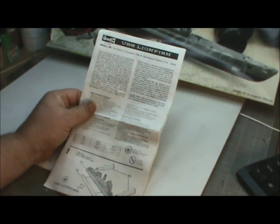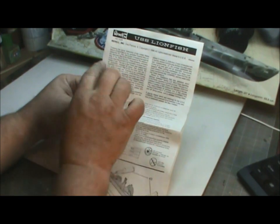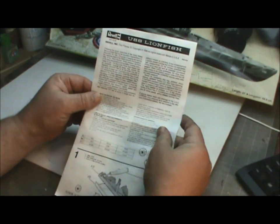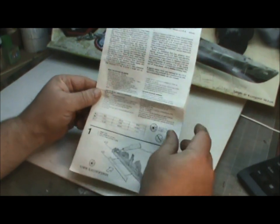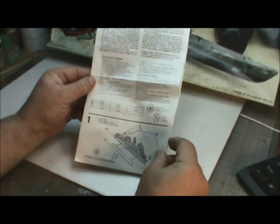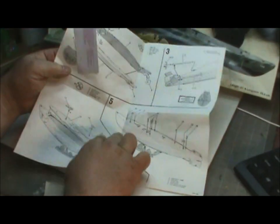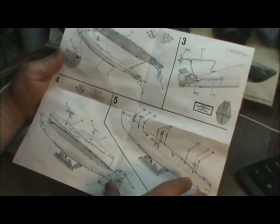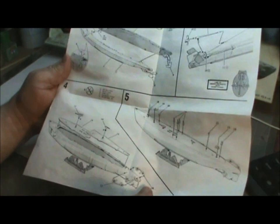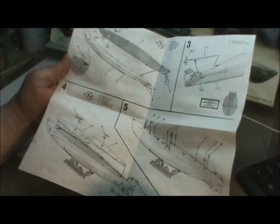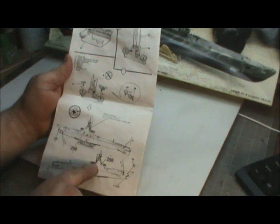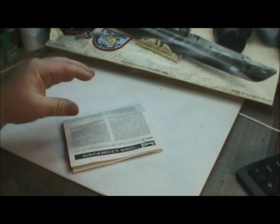And lastly, we have our instructions. Instructions are pretty simple. You've got a little bit of information here about the sub itself. It's a class, it's a Gato class sub and all that stuff. It's all good. So, it gives you your paint call outs down here and then it starts with your first step, which is assembling the stand for it. So, you go inside and you've got five steps, you've got six, seven, eight steps all together to build the ship or boat. I'm sorry. Very simple. I mean, it's not hard to do. And then the last step is your decal placement.